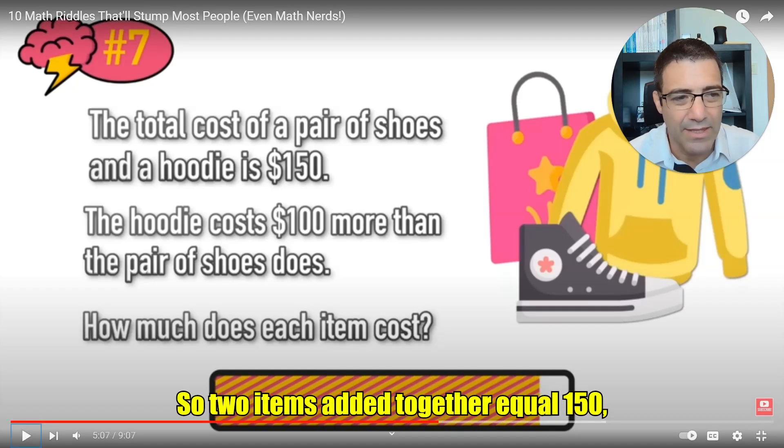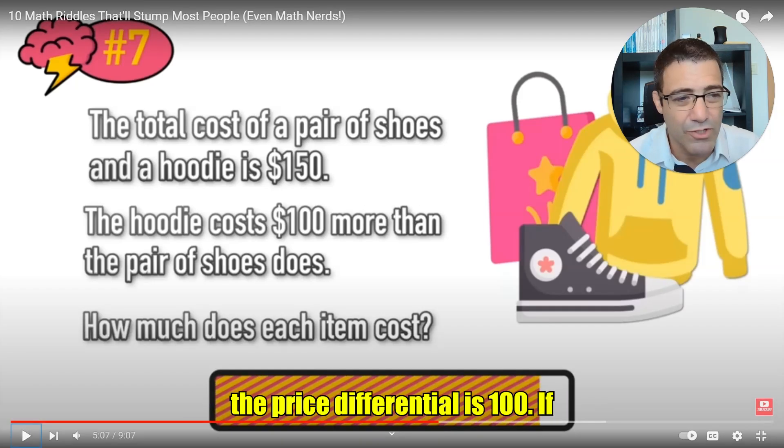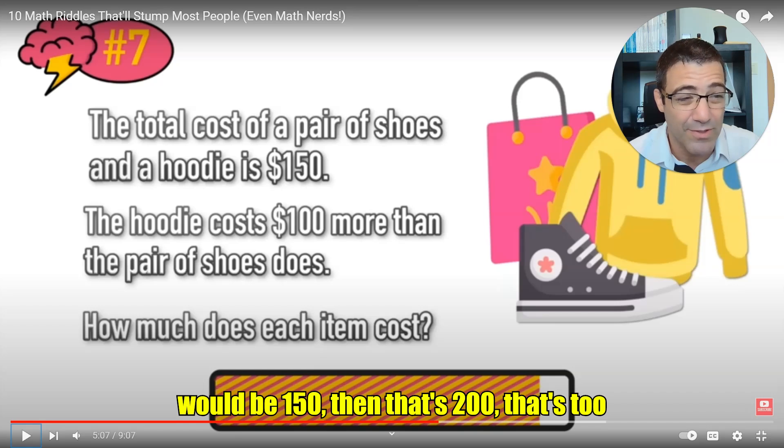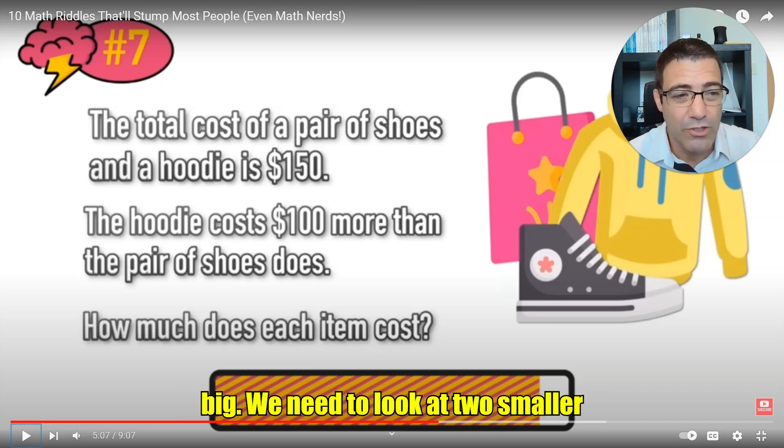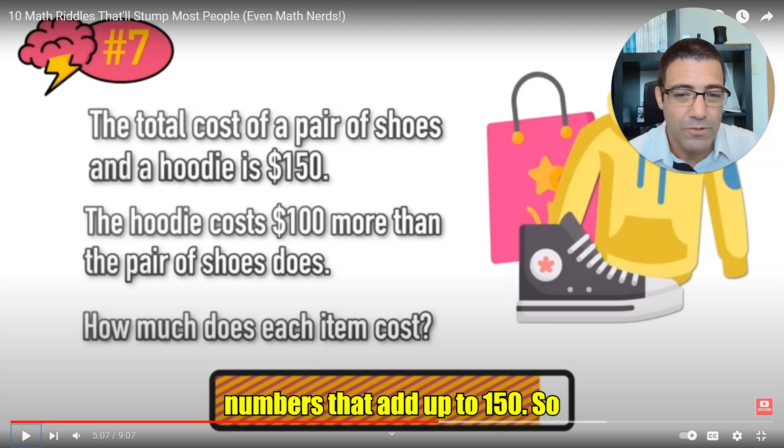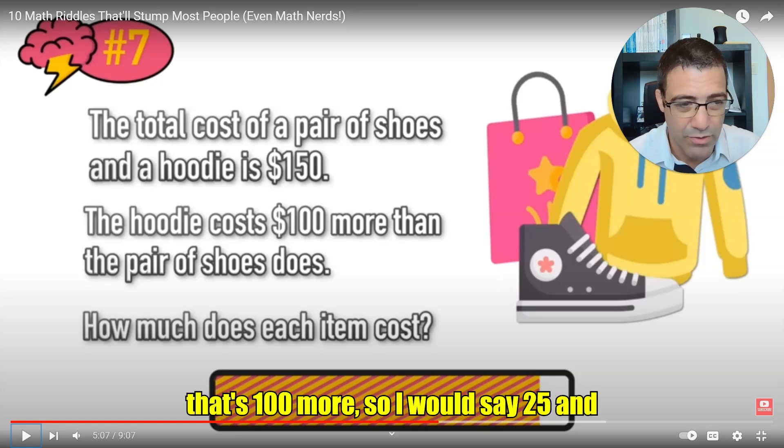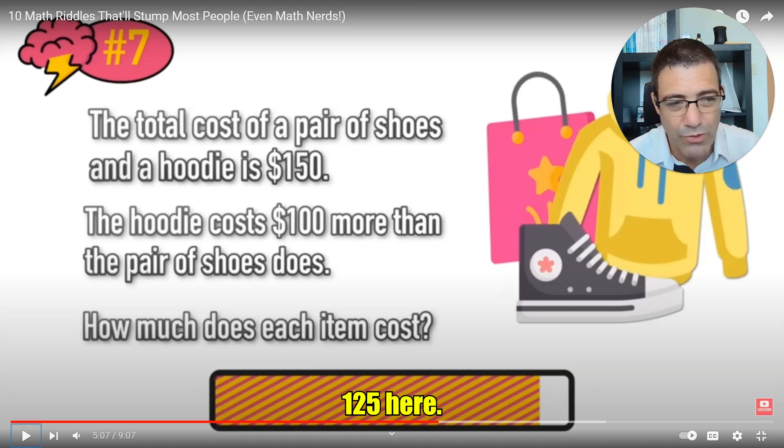So two items added together equal $150, the price differential is $100. If the pair of shoes was $50, the hoodie would be $150, then that's $200, that's too big. So we need to look at two smaller numbers that add up to $150. So $25 and $125 seems reasonable, and that's $100 more, so I would say $25 and $125 here.